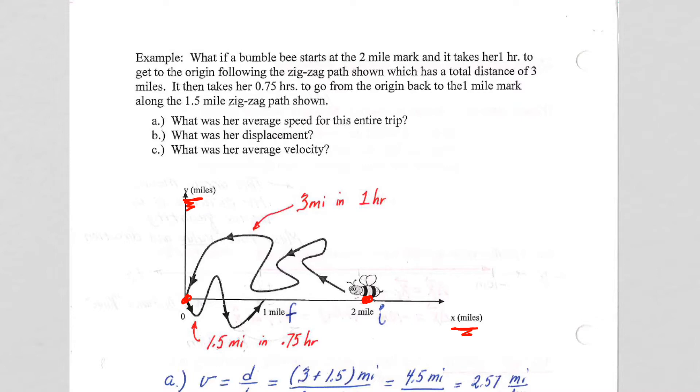Here we're actually looking at a two-dimensional motion where we won't typically do that. I'm only using a two-dimensional motion here to illustrate the point. Her final position here, after the first part of her trip, is certainly one-dimensional, still on the x-axis. But we're told that she then follows a zigzaggy path, and the total distance is three miles for the first part of the trip. It then takes her 0.75 hours to go from the origin back to the one-mile mark along a zigzaggy path, where that is 1.5 miles in 0.75 hours.